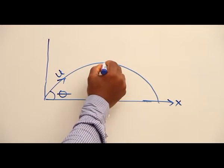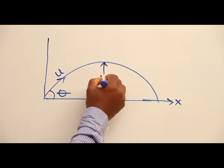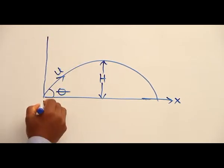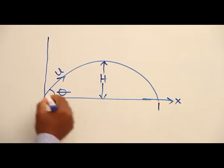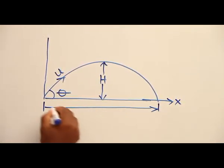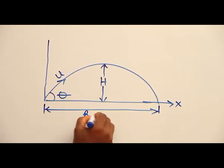Then the maximum height is represented by H. The horizontal distance covered from the point of projection to the point where it returns is given the name range.